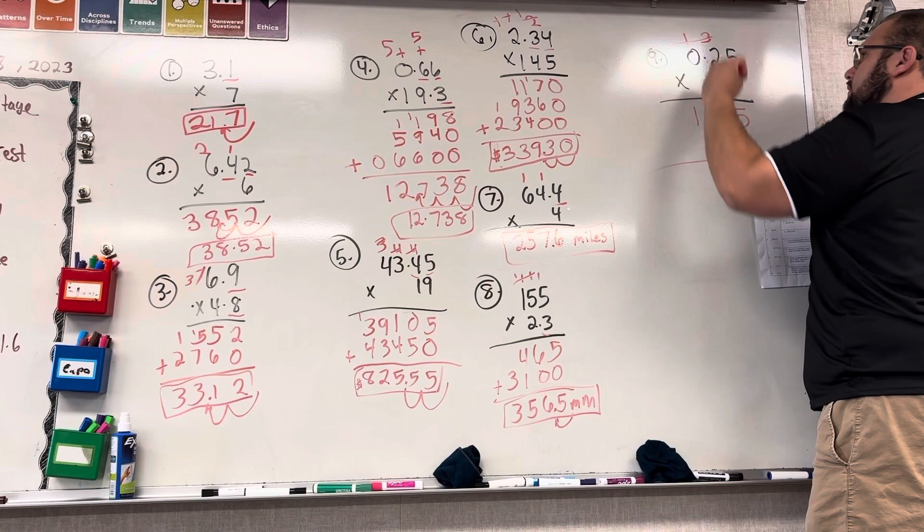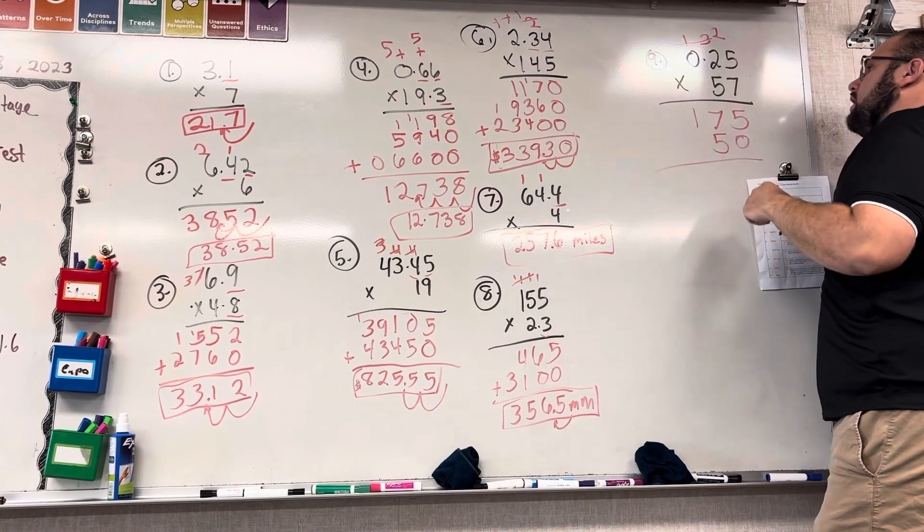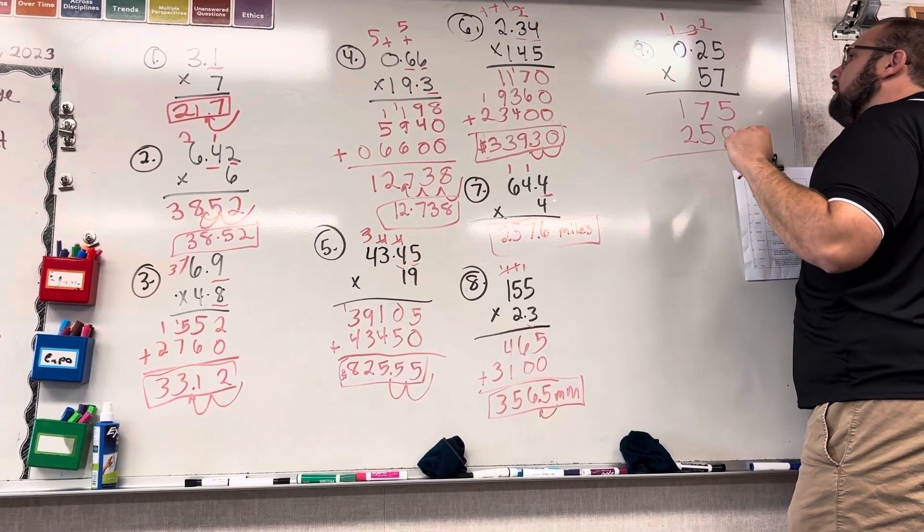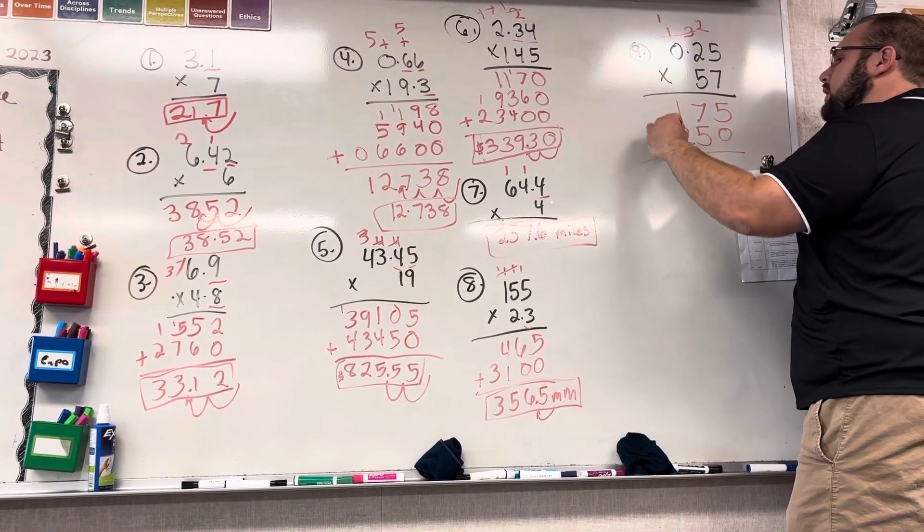Now we do the 5s. 5 times 5 is 25, carry the 2. 5 times 2 is 10, plus 2 makes it 12, carry the 1. 5 times 0 is 0, plus 1 makes it 1.